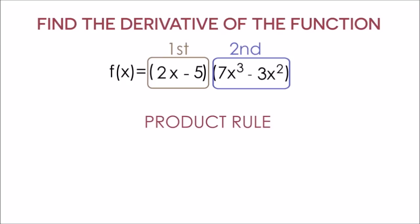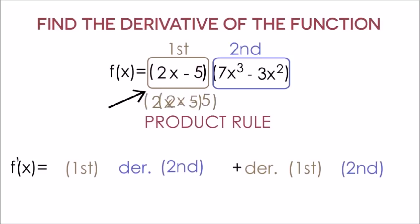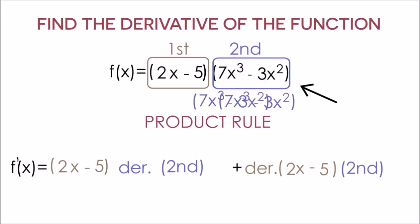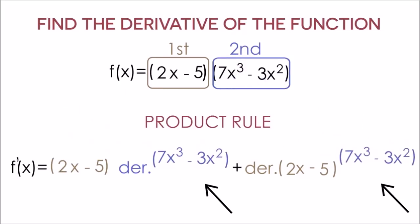And now we can use the product rule formula to take the derivative of this function. And the product rule formula is the first thing multiplied times the derivative of the second, plus the derivative of the first multiplied times the second. And the only thing we have to do is plug in our first thing of 2x minus 5 everywhere we see first. And we can plug in our second thing of 7x cubed minus 3x squared every time we see second.